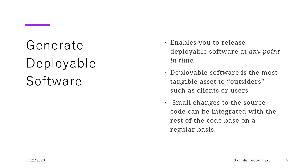The third value is generating deployable software. Since we are doing continuous integration and later continuous deployment and delivery, it enables us to create a deployable software at any point in time. Deploying our software from one environment to another becomes seamless. If there are any small changes happening to the code, the rest of the code is still getting tested. So the moment we check in, it is getting tested — giving us confidence in our software product and making it very ready for deployment.